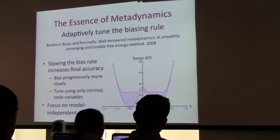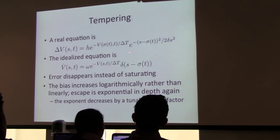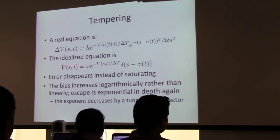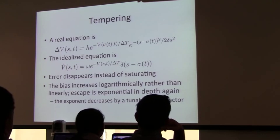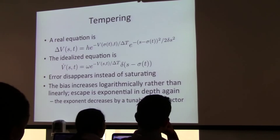The equation used in this well-tempered metadynamics paper — published six years after the original — is the same hill, H times a Gaussian, but now multiplied by a factor that decreases as you increase the bias already at that point. So if you've visited a point before, you bias away from it less than if you hadn't seen it. Taking this to the delta function limit, instead of making the bias completely flat, you get a bias that is flat except for a constant scaling factor — it flattens the free energy as if you were raising the temperature, but only for the collective variables.